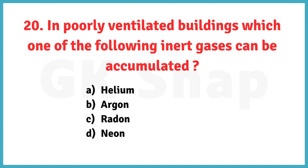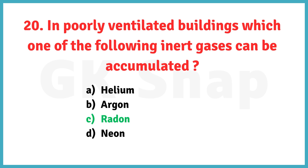In poorly ventilated buildings, which one of the following inert gases can be accumulated? Correct answer is option C. Radon.